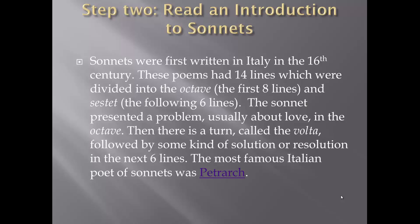Sonnets were first written in Italy in the 16th century. These poems had 14 lines, which were divided into the octave — the first eight lines (oct, O-C-T, means eight) — and the sestet, the following six lines.